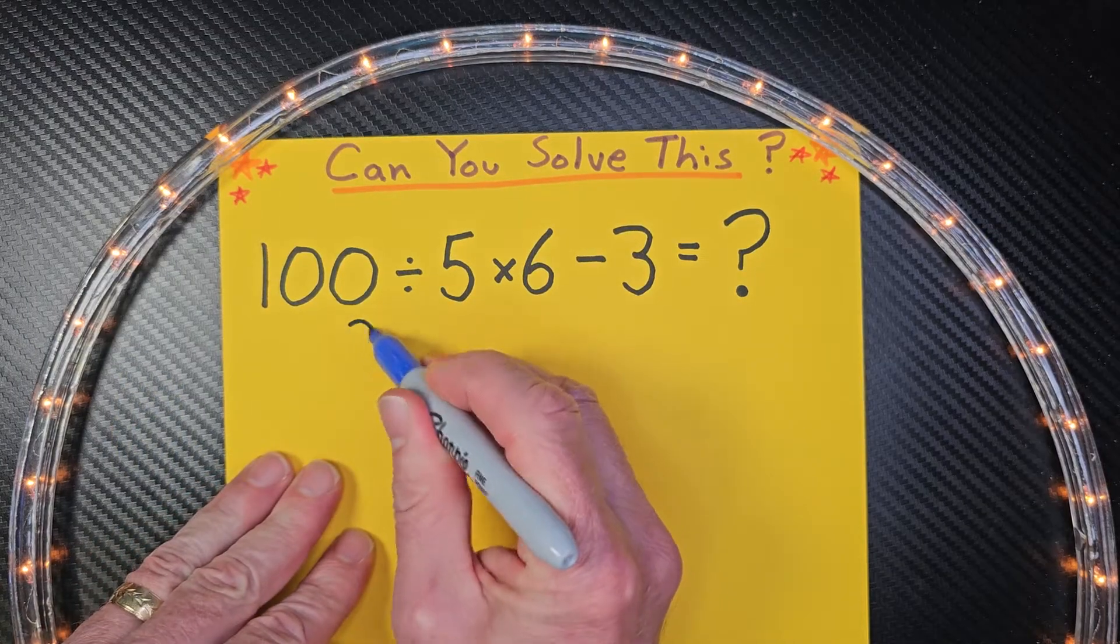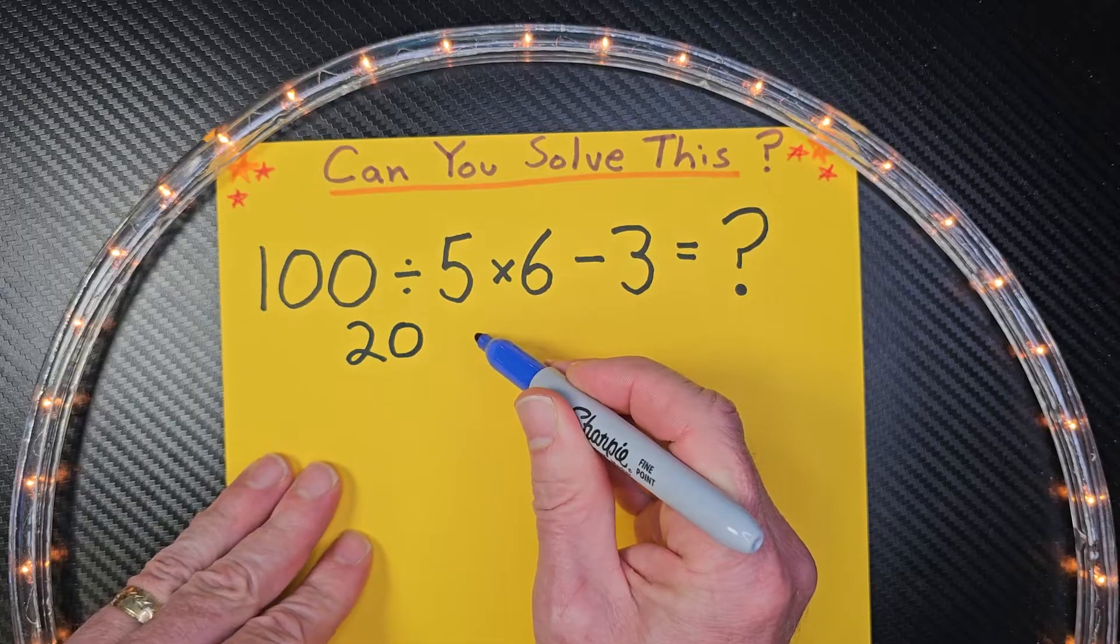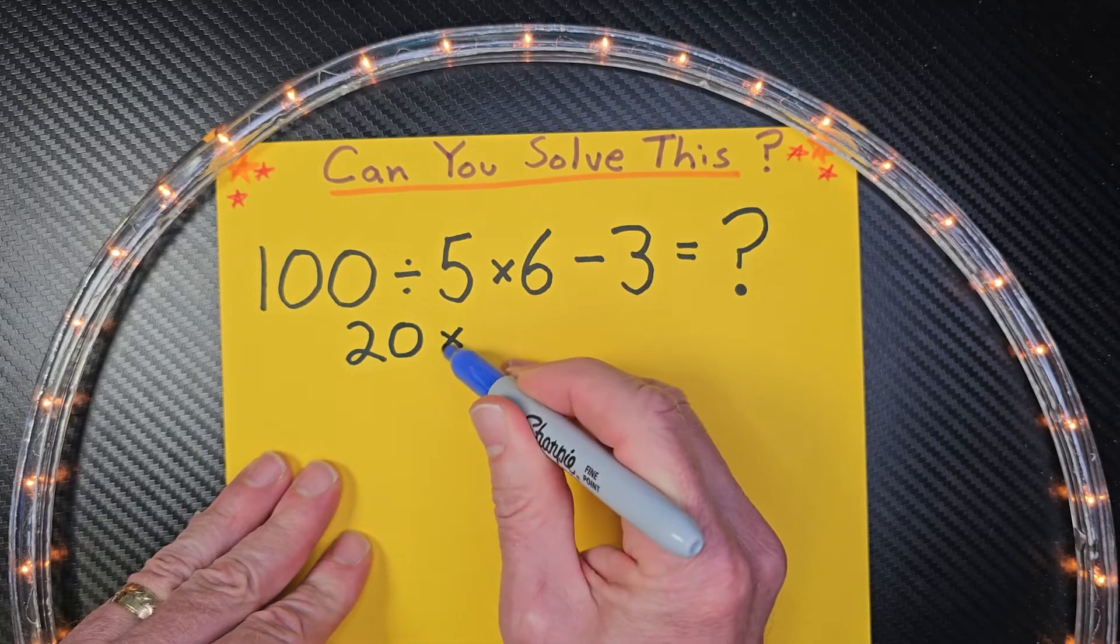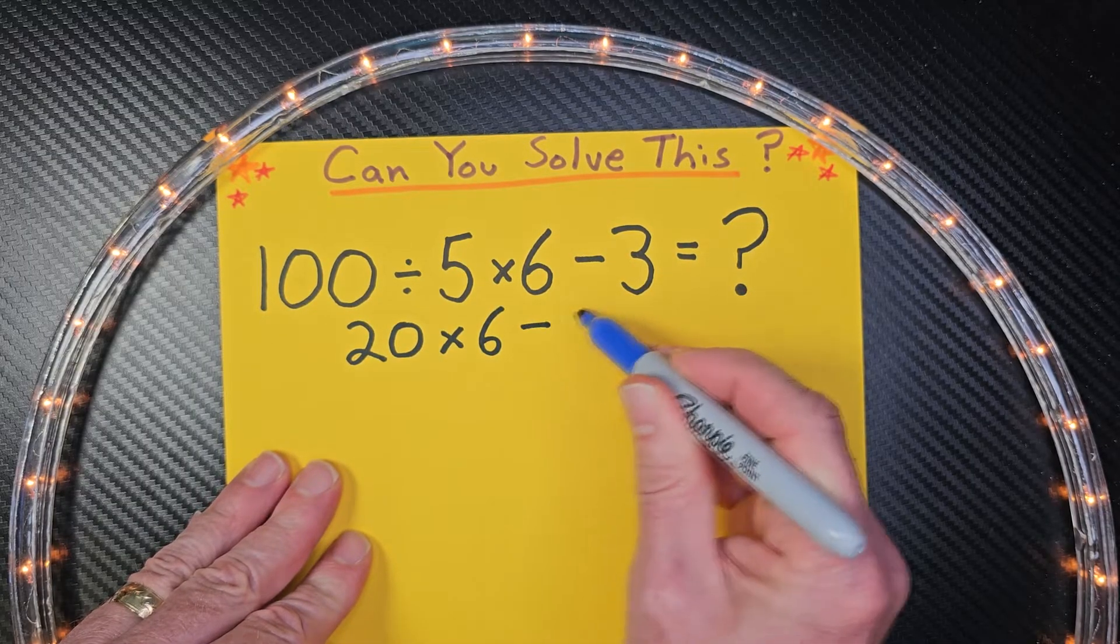So I'm going to put 20 right here, and I'm rewriting the problem out. 20 times 6 minus 3. And then I just start all over again.